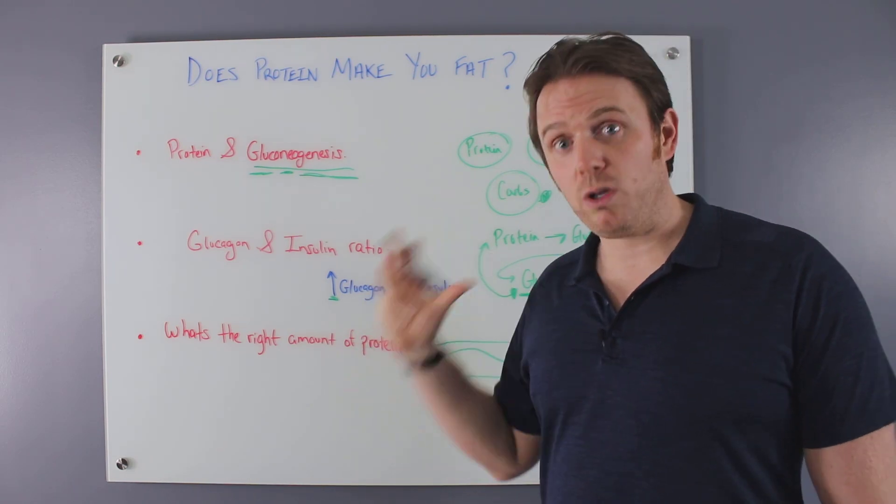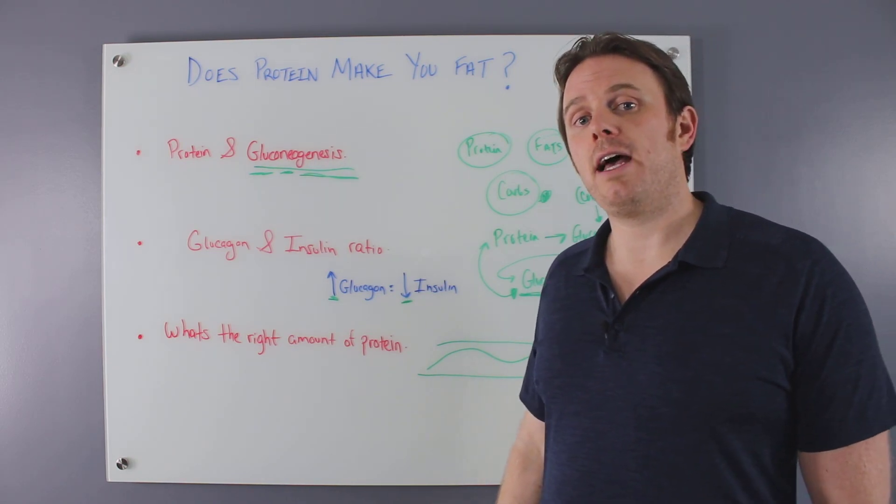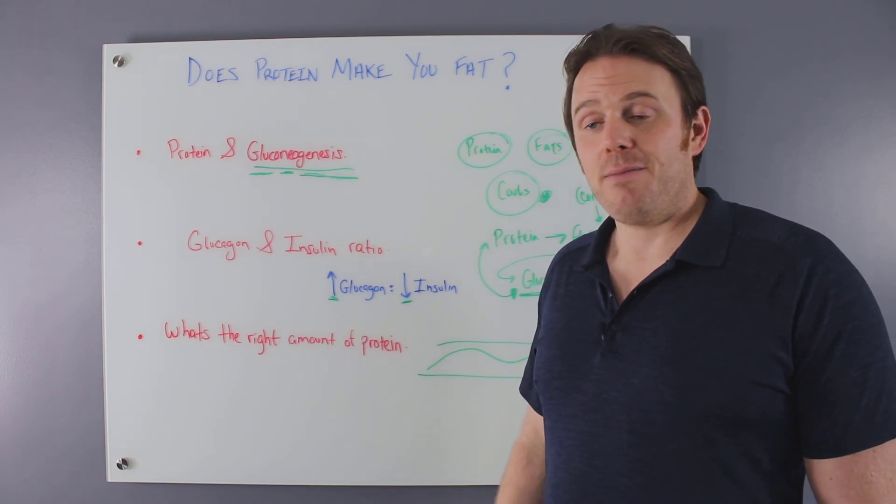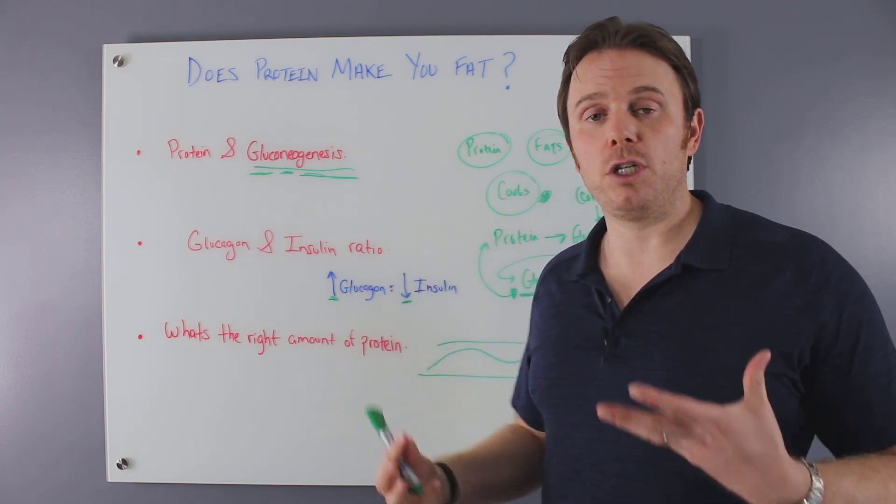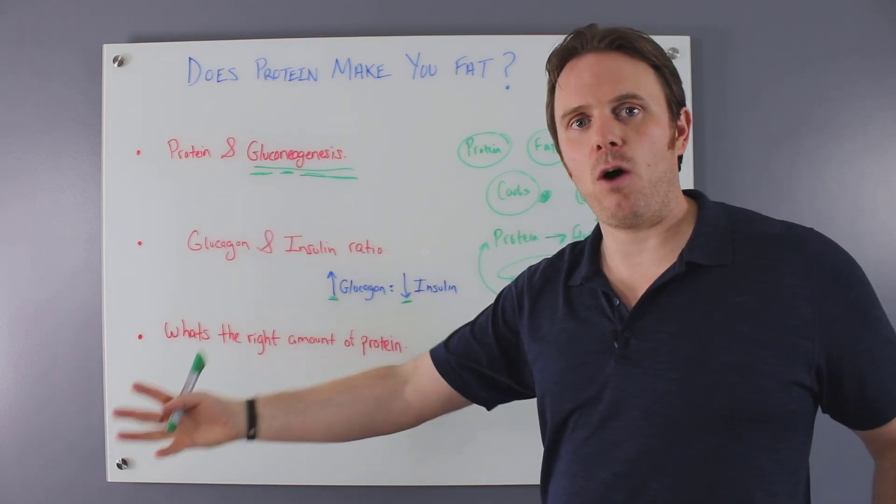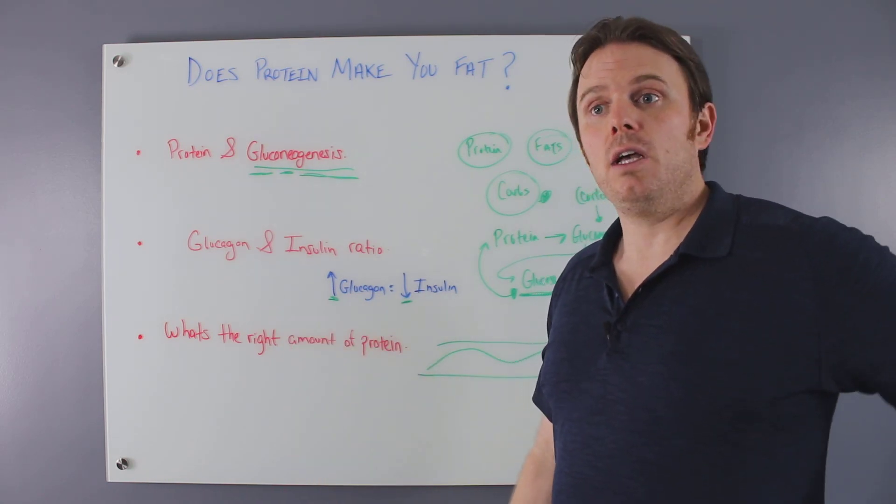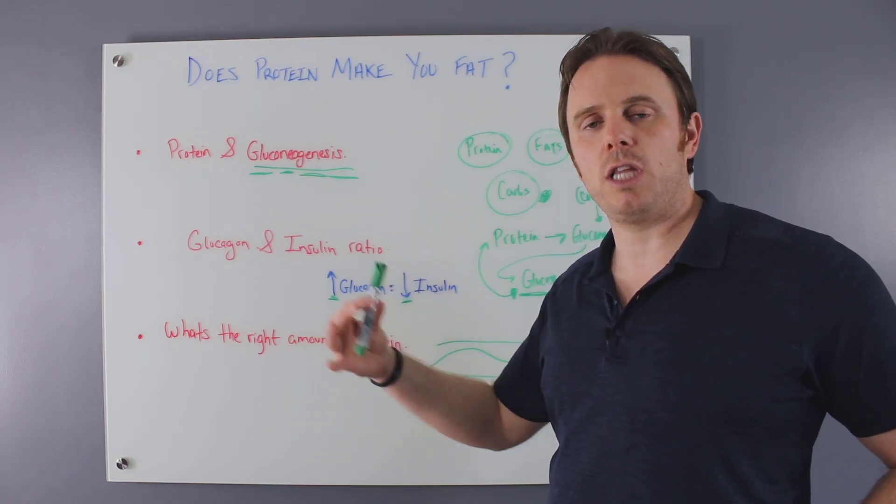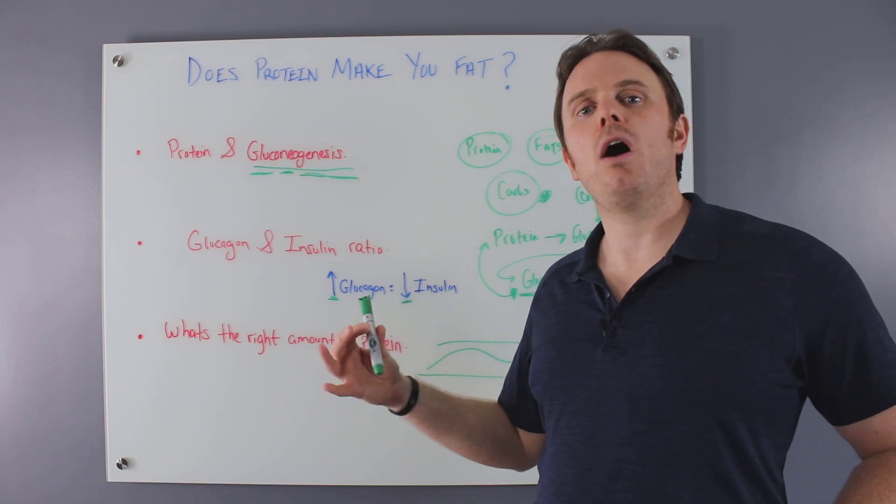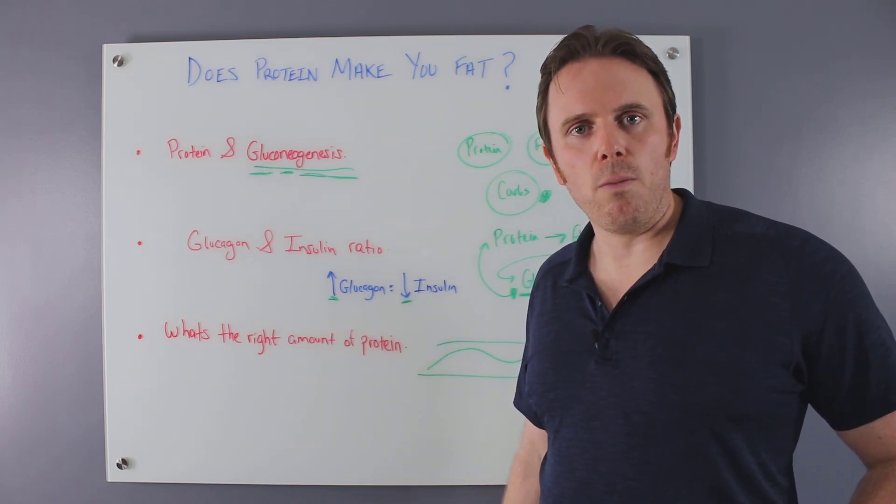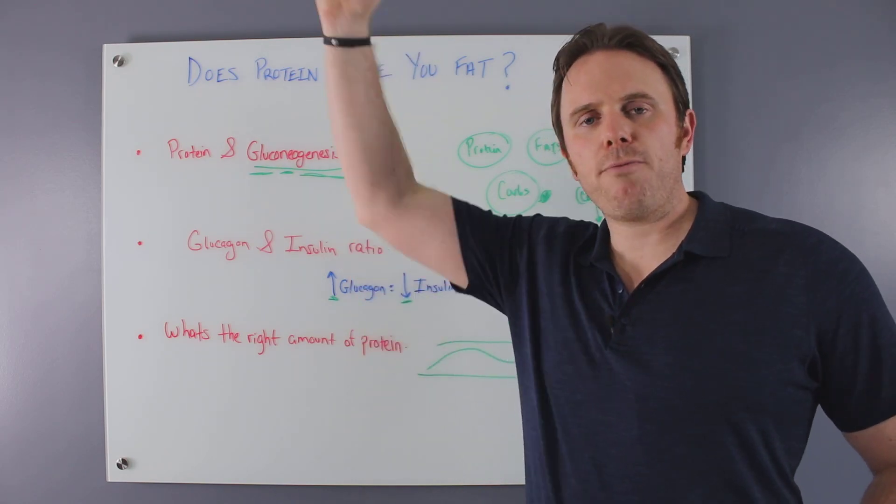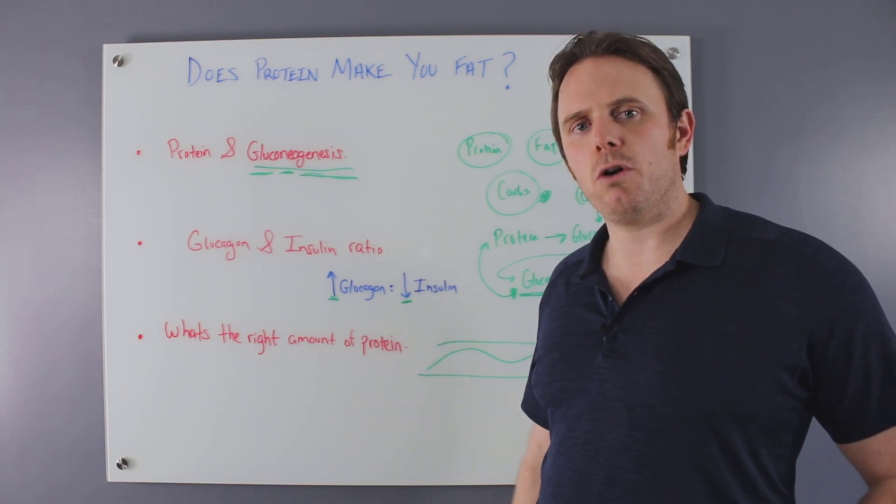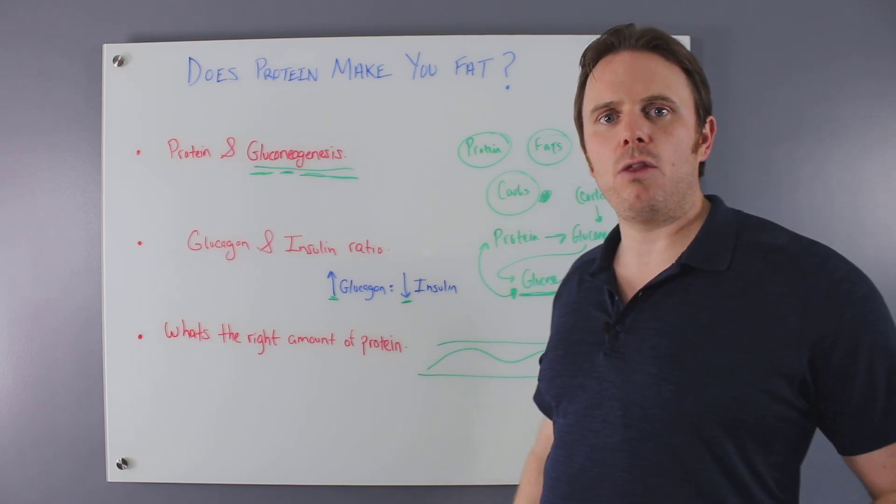And then once that liver gets fully saturated with fructose, it can actually create systemic insulin resistance. That's why fructose and high fructose corn syrup is so bad because you have less of a reservoir for fructose, where glucose, you have most of all your skeletal muscle. You've got about 80 to 85% more storage room for glucose in your body than you do fructose. That's why fructose is so deadly when it's in its refined form. Because once that liver is really saturated and pummeled with fructose, you're actually going to have systemic insulin resistance.